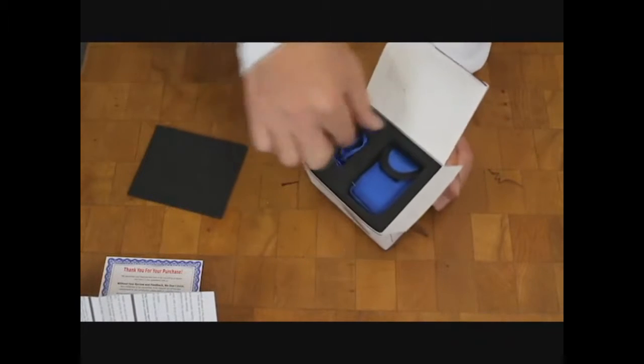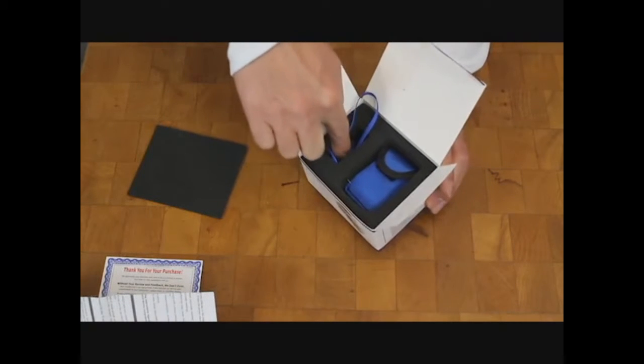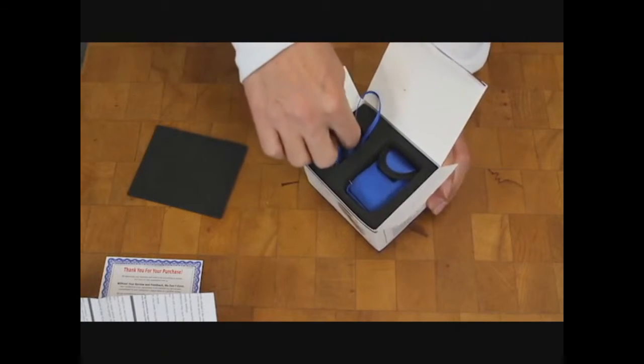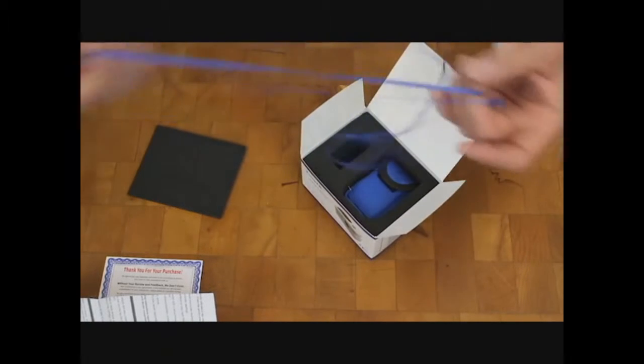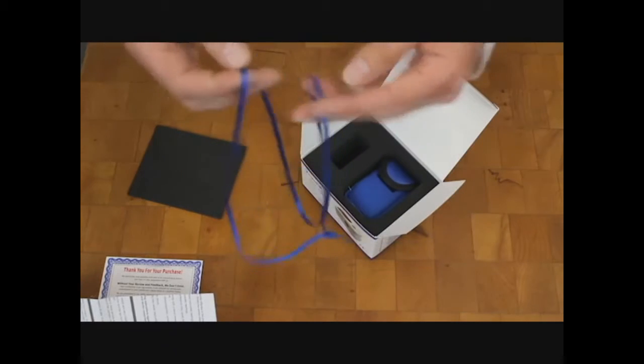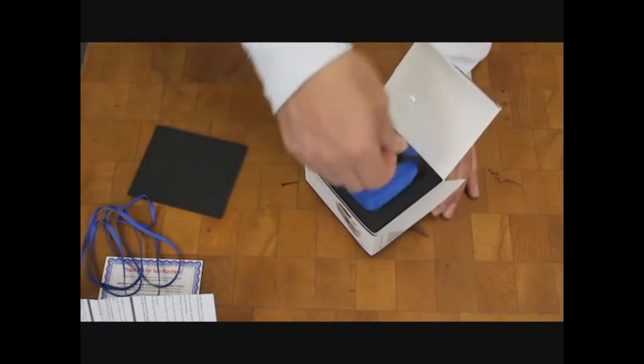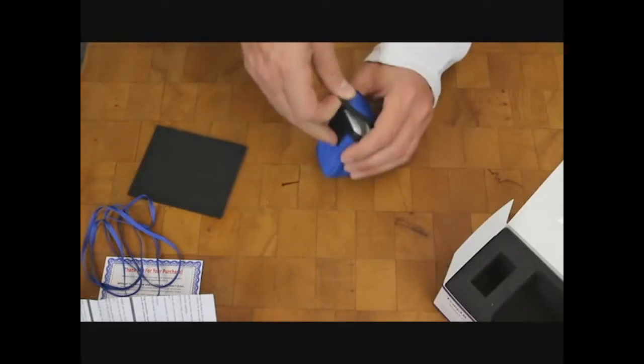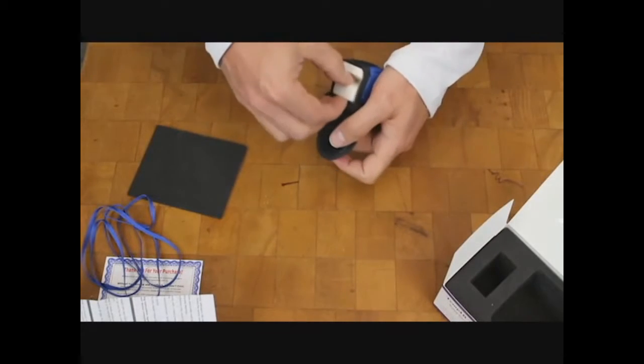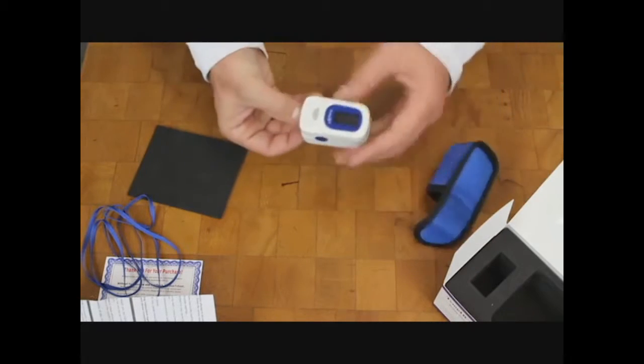This is how it comes. There are two AAA batteries in here; it comes with the batteries. I've already installed them and been playing with it. This is the lanyard that it comes with so you can put it around your neck or whatever you want. It comes in this really cool little case just like that.